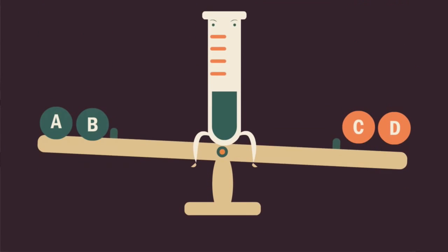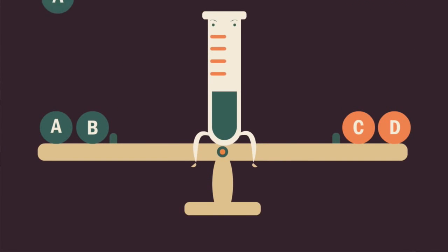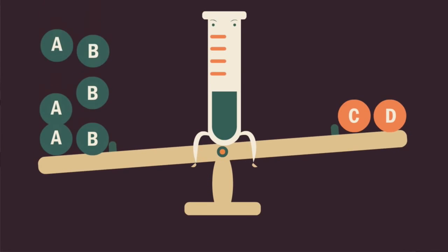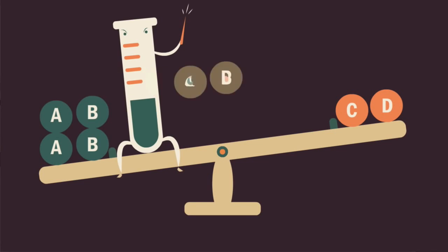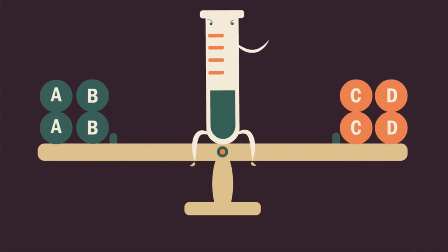If we added more A and B, the system becomes stressed and is no longer at equilibrium. To counteract the stress, the system forms more C and D in order to remove the excess A and B. The equilibrium therefore shifts to the right.